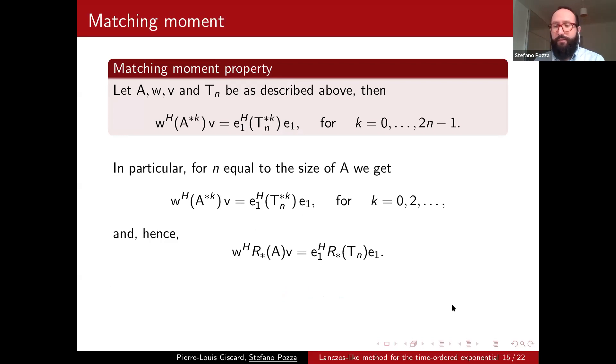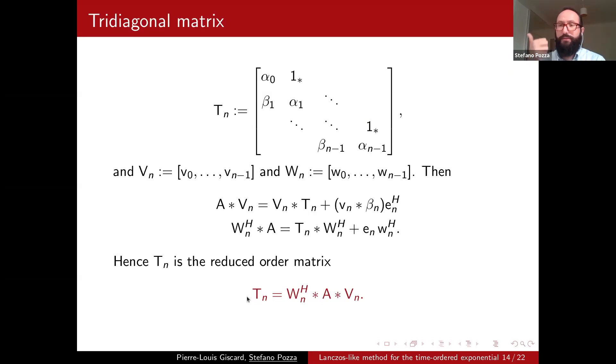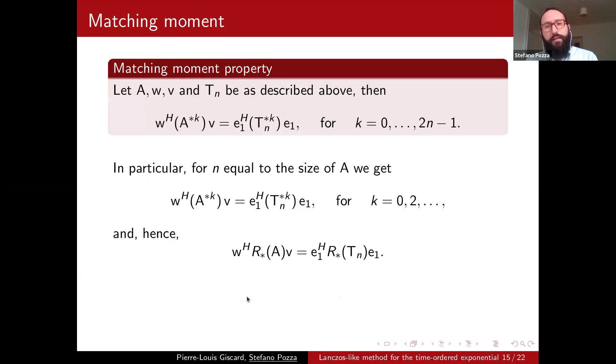So now we have our tridiagonal matrix that was the first property we wanted to build, and we also have the second property we wanted to get, because we proved that this matrix TN satisfies a star matching moment property. So the star powers of T and A are matched in this way for k up to 2N minus 1, and in particular, when N is of the size of the matrix A, then the star moments are the same for every k. Which means to go back to our initial problem, that the star resolvent of A is equal to the star resolvent of T.